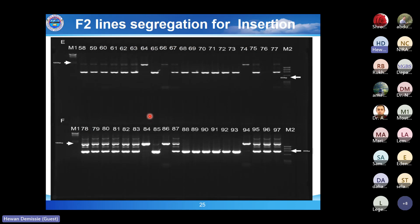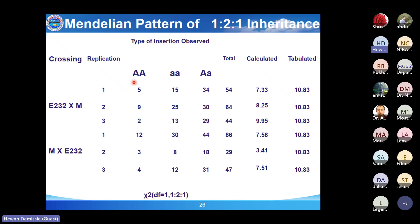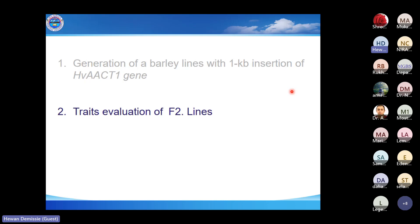We confirmed that the one kilobase pair insertion follows Mendelian inheritance. We performed crosses in both directions — Ethiopia line with Murasaki Mochi, and the reciprocal cross — with three replications each. Chi-square analysis showed no significant deviation from the expected 1:2:1 inheritance pattern. This was a good sign, and we used these lines for the second experiment evaluating F2 lines under acidic soil conditions.